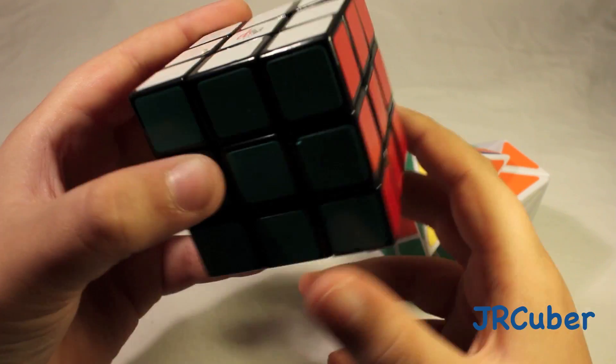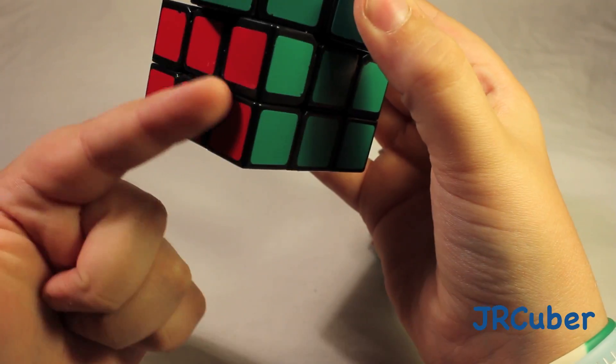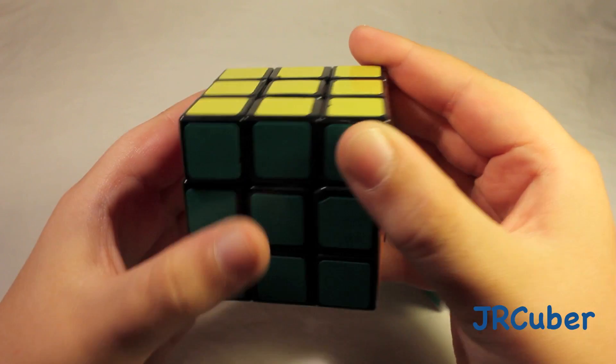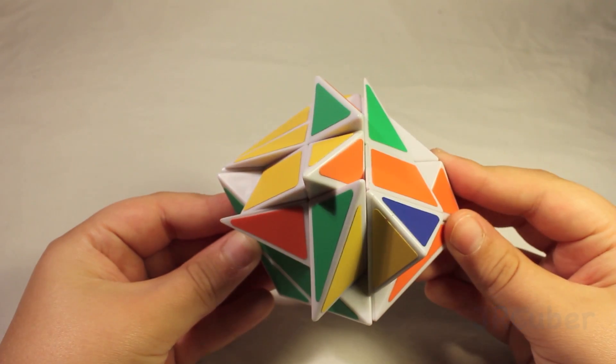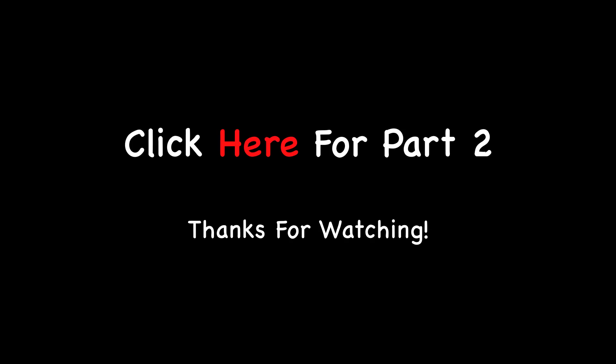So on a Rubik's cube, you would have these two layers done. So now, all that's left is the top layer.